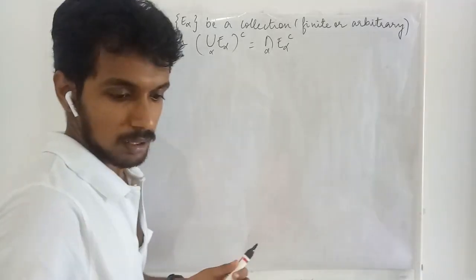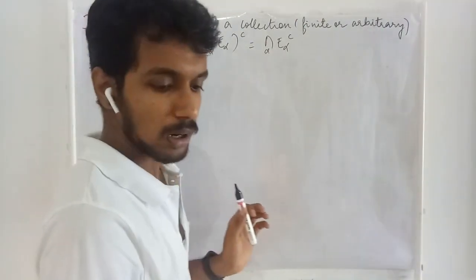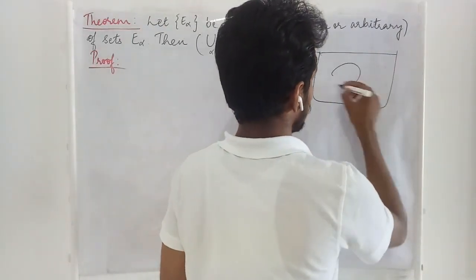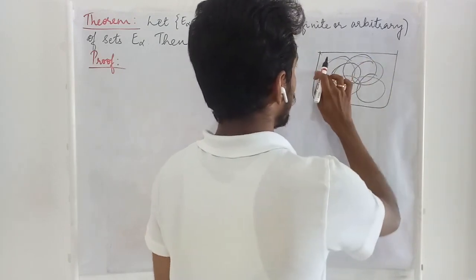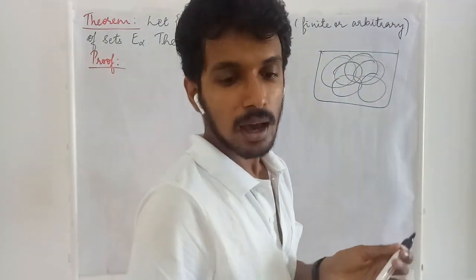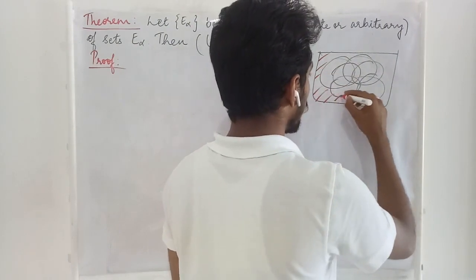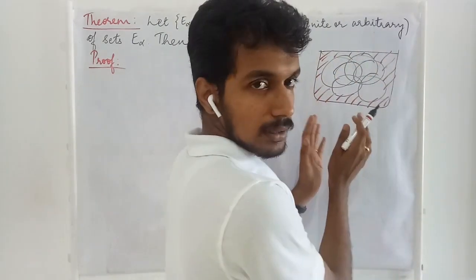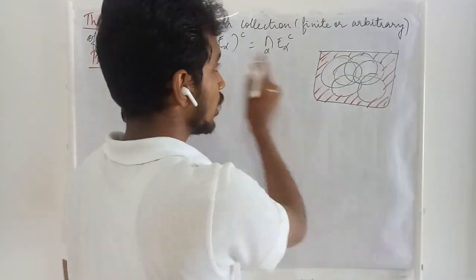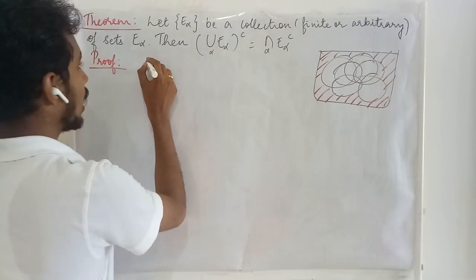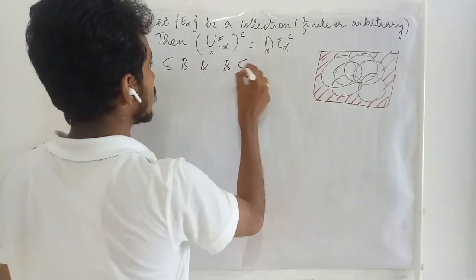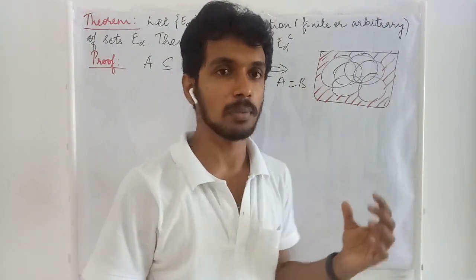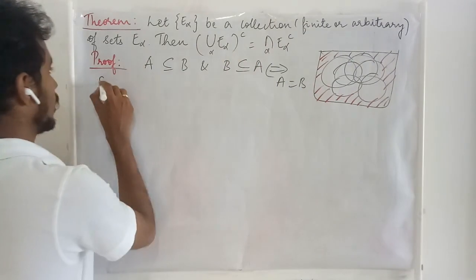Before starting this proof, let us note what these two things are. We are making the union of the sets E-alpha and then taking the complement, which gives one set. On the other side, we have the intersection of the individual complements. Whenever we need to prove two sets are equal, we have to prove A is contained in B and B is contained in A. If both hold, then A and B are equal. This is the strategy we are going to use to prove this result.